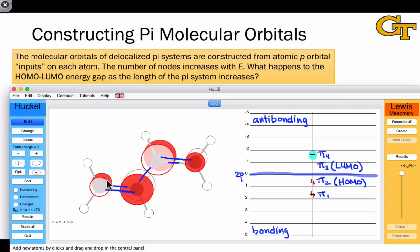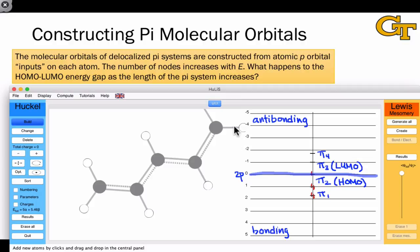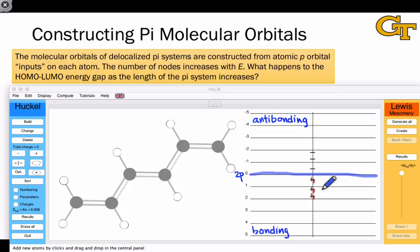We see an alternating phasing pattern so that there's a node between every adjacent pair of atoms. What happens when we add yet another double bond to this conjugated system? Let's move now to hexatriene, a pi system with six atoms total. Now we have six total pi molecular orbitals, and I'm just going to focus in now on the HOMO and LUMO.